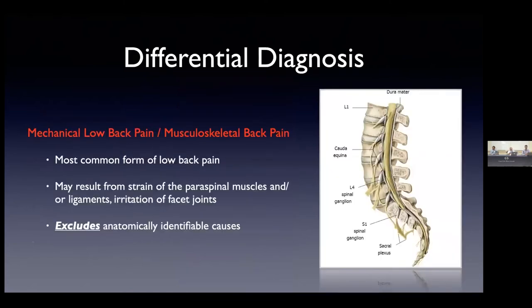When generating a differential diagnosis, mechanical low back pain is the most common form. It can result from strain to the muscles or ligaments, or irritation of the facet joints — basically encompassing everything except anatomically identifiable causes for back pain. The majority of patients who have back pain, we really can't find a specific cause, and we lump them into this category.